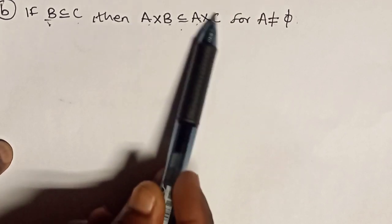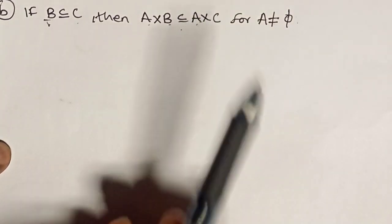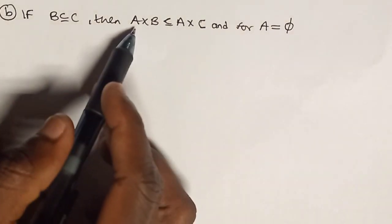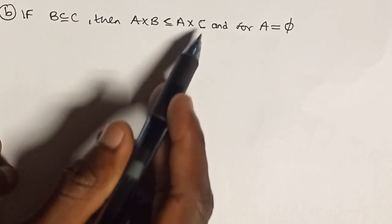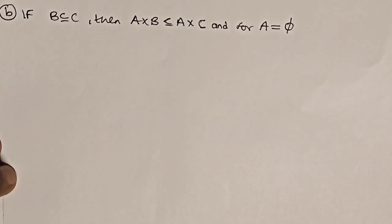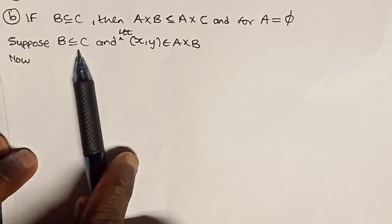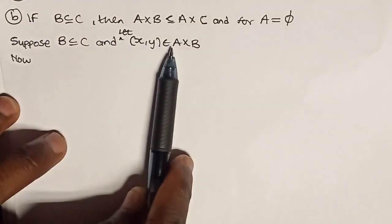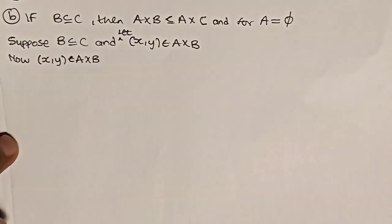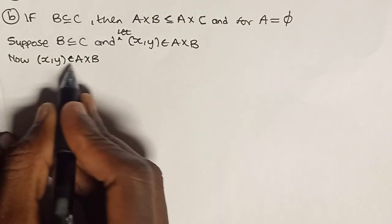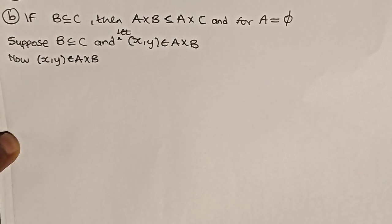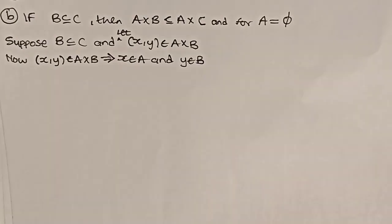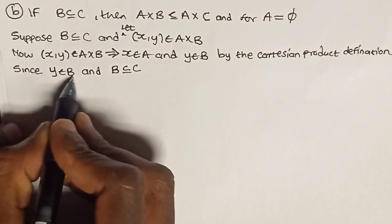We let X be in A cross B, then we'll show that X is also in A cross C. Let a pair (X, Y) be an element of A cross B; then we'll have to show that the pair (X, Y) is also an element of A cross C. Suppose B is a subset of C and let (X, Y) be an element of A cross B. A pair (X, Y) being an element of A cross B means X is in A and Y is in B, by the Cartesian product definition.